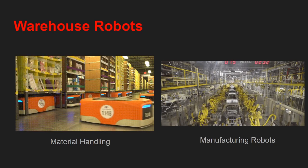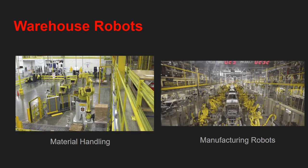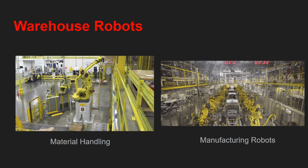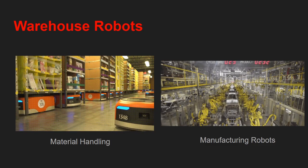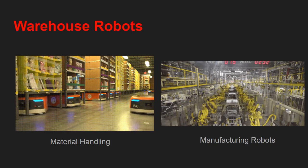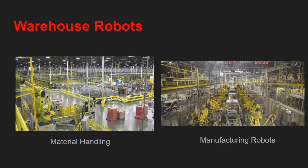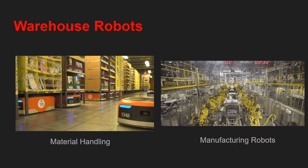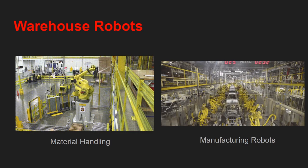Looking at warehouse robotics, on the left you can see robots handling material — a manipulator lifting very heavy loads without any human intervention. This automation improves productivity. The orange robots are from Amazon's warehouse, moving products from one place to another. One is a fixed-base manipulator and the other is mobile.